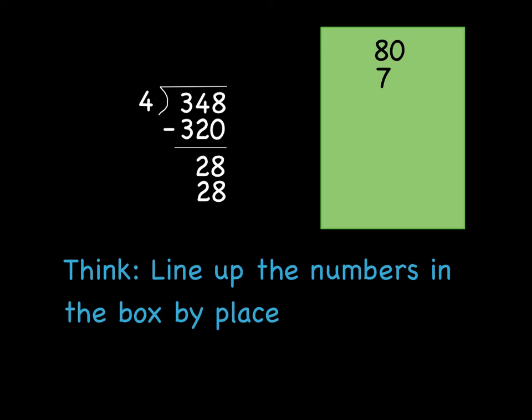But be careful when you write your 7 over here. I'm not going to write it underneath the 8. I'm going to write it underneath the ones place here. Because it's only going to be a one digit answer. You can jot it down here. But if you'll notice, when I write the 28 underneath the 28, I don't have any extra digits in my dividend. So there's no reason for me to write a 0. Which means that I need to move this 7 over here since I'm not adding any 0s. Okay? So always line up your numbers in the box by place. If this was 80 in the first case and 7 in the second case, you want to make sure they're lined up.